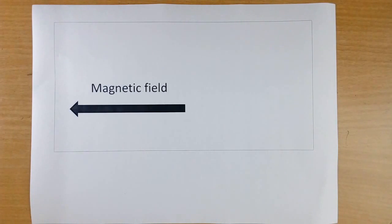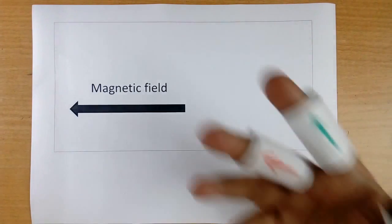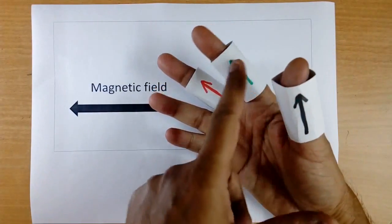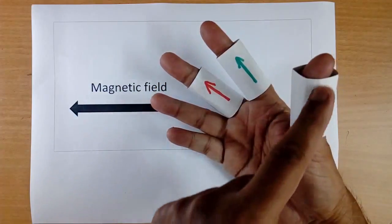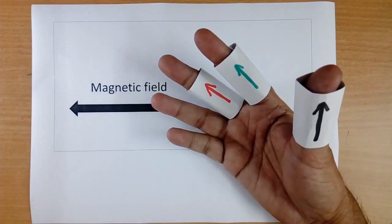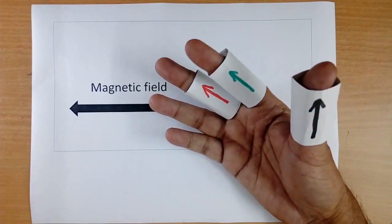Now I will tell how to make electricity using magnet and motion. I have told two things are required — one is magnet, one is motion. Now you are seeing in my hand, in three fingers, three arrows I am showing. I have put these arrows here to explain in a simple way what is the method of making electricity.